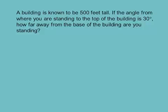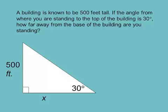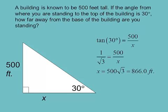Let's do story problems. A building is 500 feet tall. If the angle from where you're standing to the top of the building is 30°, how far from the base are you? Draw a right triangle: 30° angle, opposite side 500 ft, unknown adjacent side x. Tangent of 30° = 500/x, so 1/√3 = 500/x, giving x ≈ 866 feet.